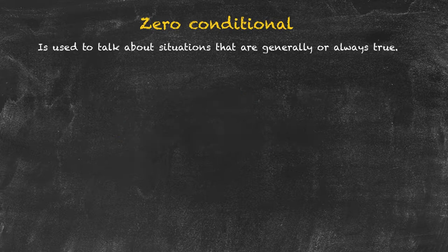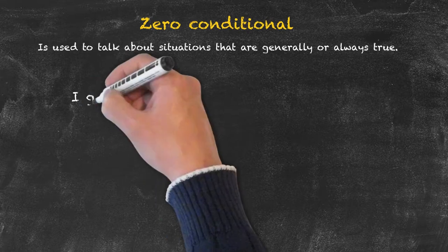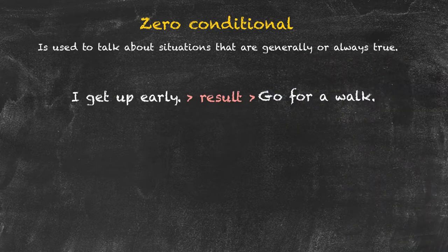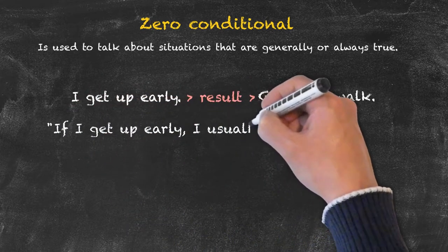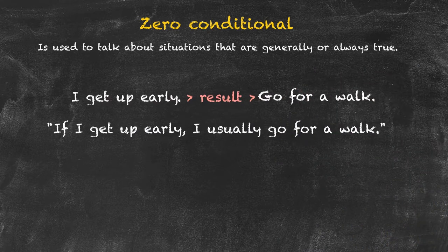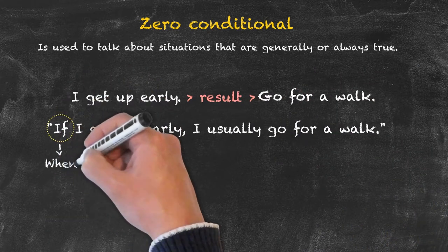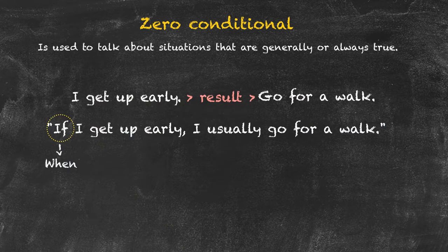Let's have a look at another example using the zero conditional, with a slightly different situation. The result of me getting up early in the morning could be to go for a walk, as a typical activity that I do. How can we put this into a sentence? If I get up early, I usually go for a walk. Again, we could substitute 'if' with 'when' to indicate the certainty of this happening.